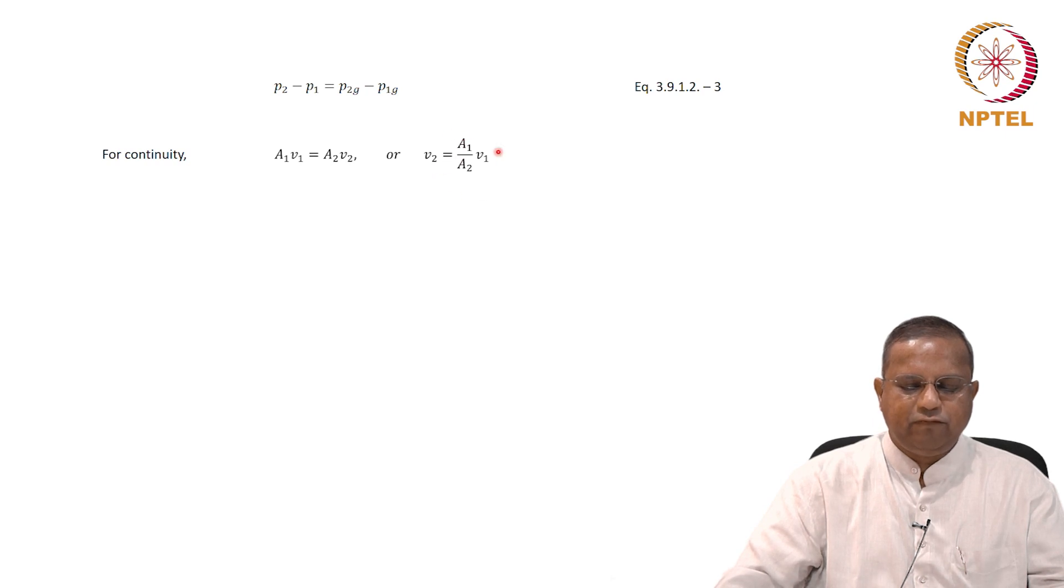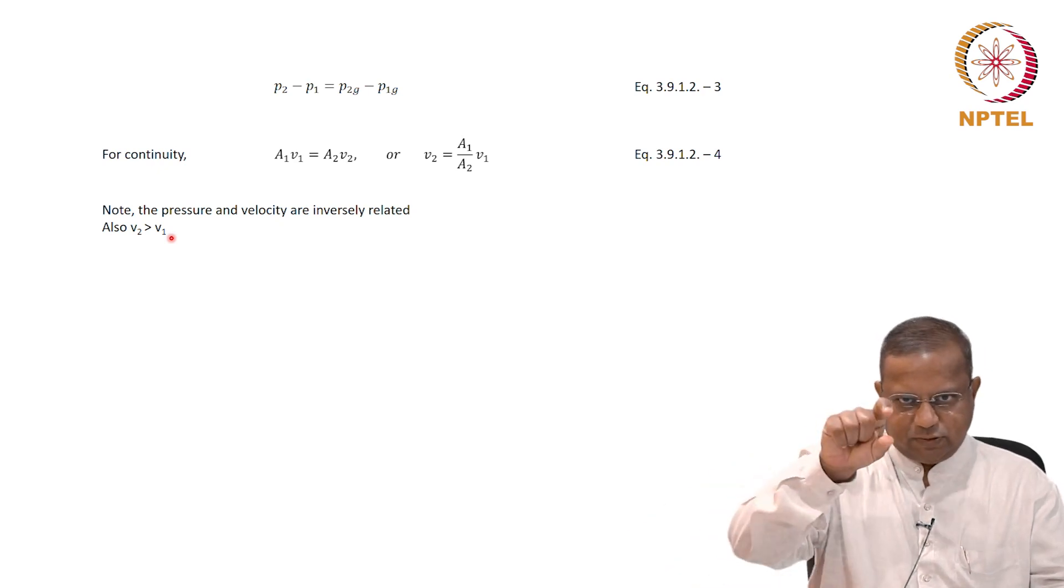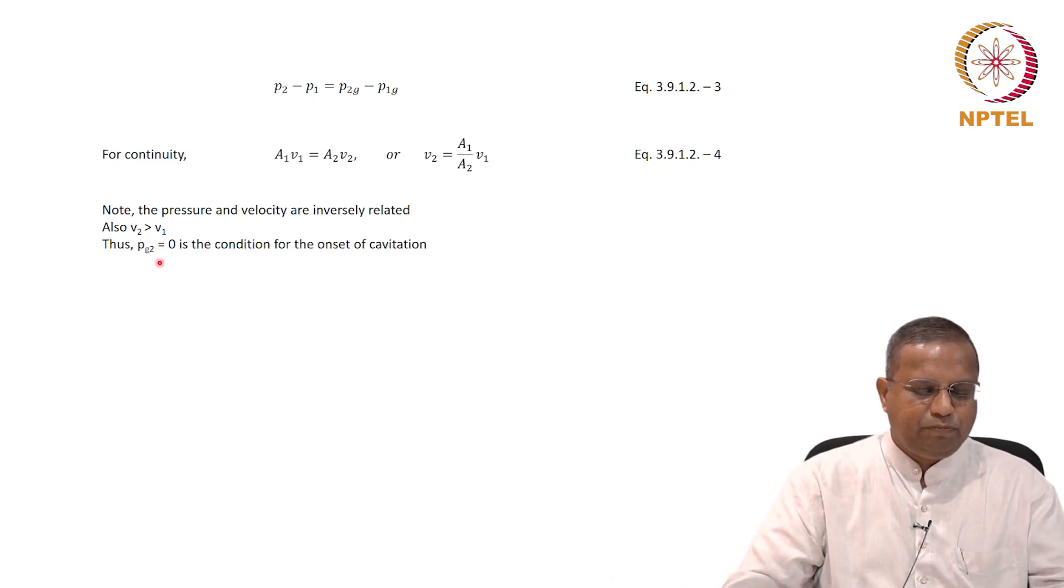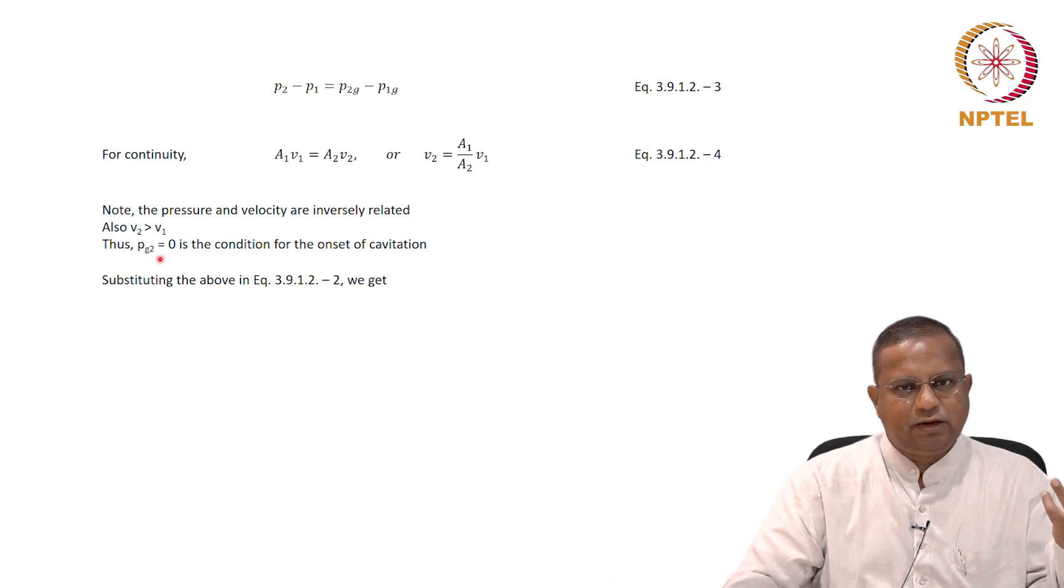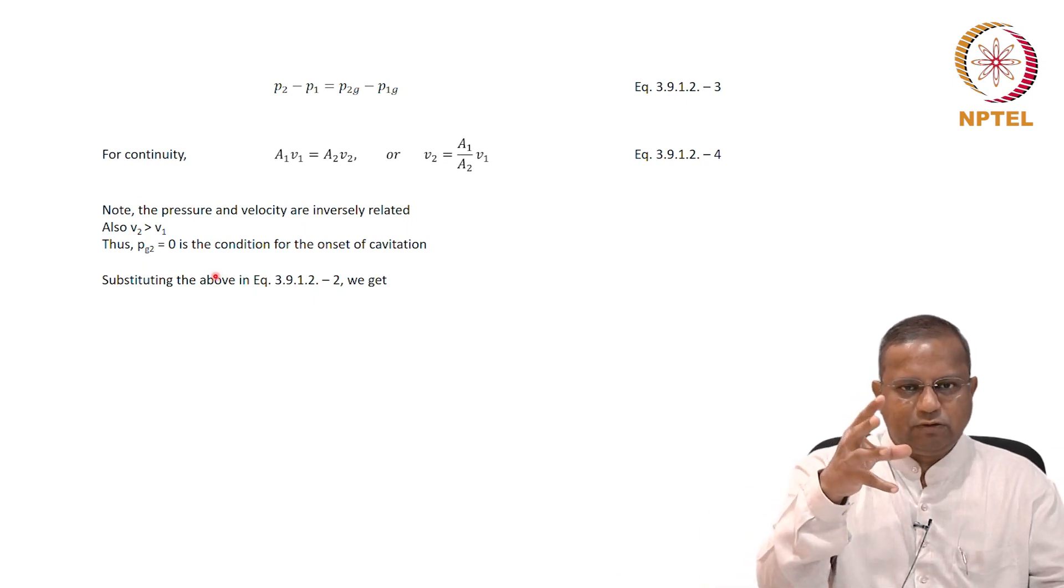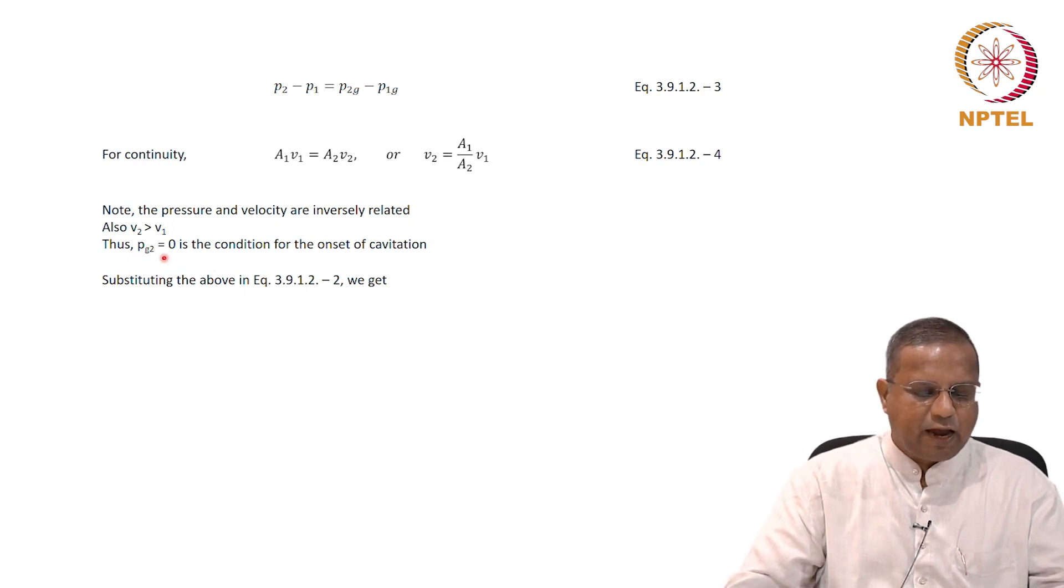For continuity to hold, a1 v1 equals a2 v2. You know the volumetric flow rate needs to be the same. Therefore, v2 can be calculated from v1, a1, and a2, 3.9.1.2-4. And we also know that the pressure and velocity are inversely related. V2 is greater than v1, you know the diameter is lower, cross sectional area is lower. Therefore, the velocity at 2 is greater than the velocity at 1. Therefore, pg2 equals 0 is the condition for onset of cavitation. The gauge pressure at 2, the difference in pressure, the gauge pressure difference is what we are looking at. When this equals the atmospheric pressure, then the liquid becomes a vapor. Subsequent bursting of the vapor bubbles or the gas bubbles will happen and that will cause cavitation. So we are considering the condition when this would become vapor, the limiting condition, that is the gauge pressure at 2 must be equal to 0.